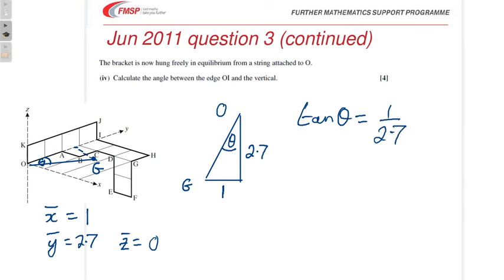and that gives us theta equals 20.3 degrees. And that's it. That's the end of that question. Just let me check the allocation of marks. So yeah, going back, going back through these parts then to the first part.